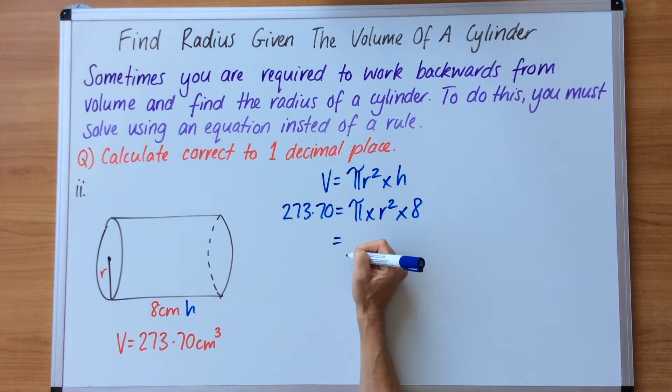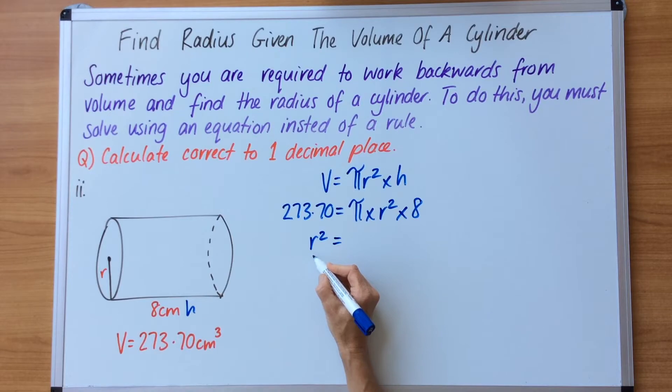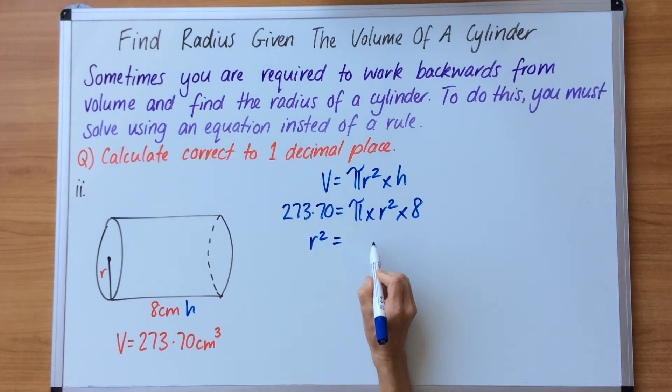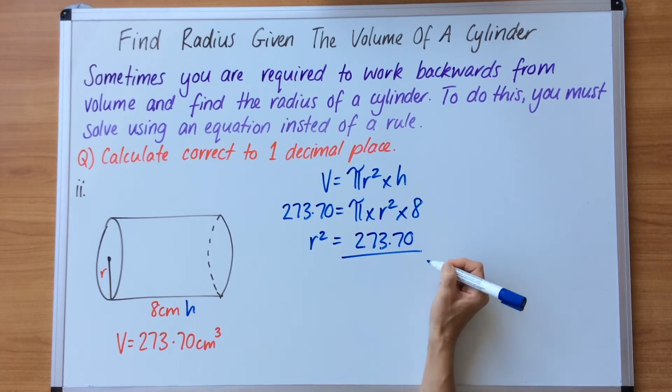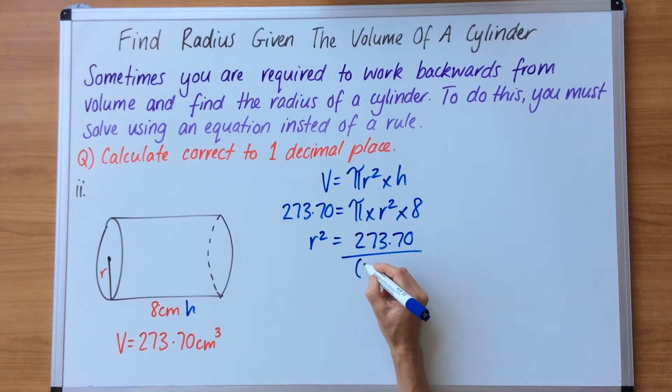We continue to work down the page. Now we have to do some swapping around here. In the third line we take the radius out and we place it on the left hand side. We want letters on the left and numbers on the right. So because we are trying to find the radius, radius must now stay on the left hand side. This volume we now are going to put the number over here, so it's 273.70. And the opposite of the multiplication is division, so that's why we've got division here. And what we haven't used we're going to put underneath in brackets, so pi times 8 bracket.